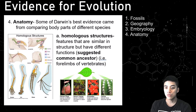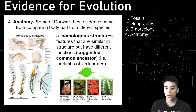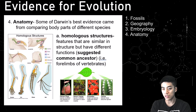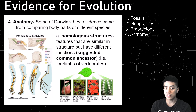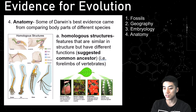Homologous structures are things that are similar in structure but have different functions. Looking at a penguin, an alligator, a bat, and a human limb, you can see the bones are all very similar but have different functions — a penguin has a flipper, an alligator has short stubby arms, a bat wing is designed to fly. The same applies to plants, like a pitcher plant or Venus flytrap — leaves modified to catch insects — versus a poinsettia and a cactus. This is evidence for a common ancestor.